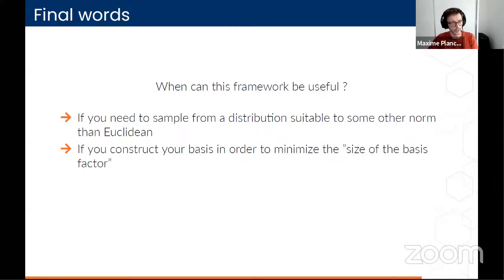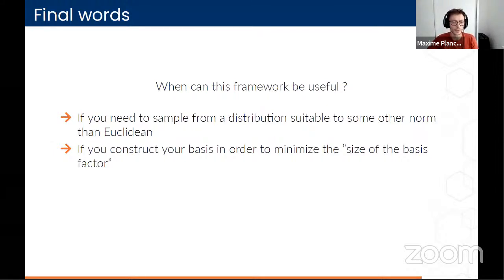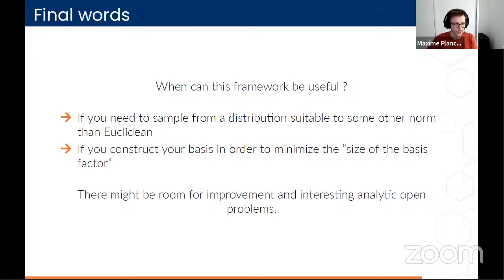Some final words on when this framework can be useful: if you need to sample from a distribution suitable to some norm other than Euclidean, this might be useful. And if you're able to construct a basis that minimizes this new size-of-basis factor, then this framework could be sampling efficiently. There may be some room for improvements and there are interesting open questions arising from it. That's about it. Thank you for listening.